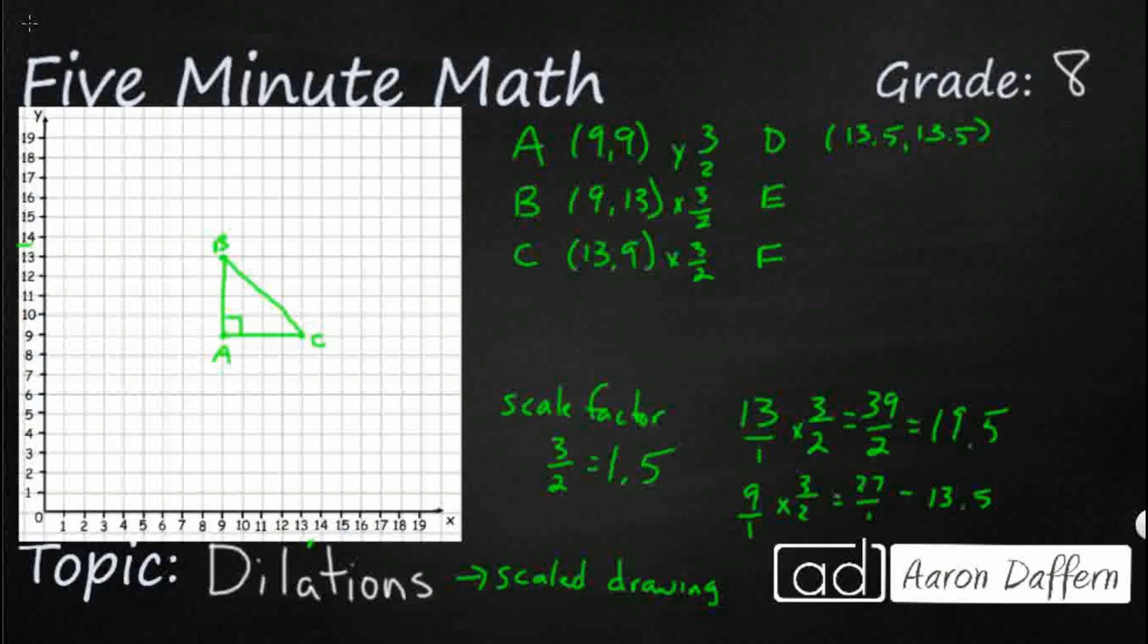And so it's actually not necessarily even going to be on a line. It's actually going to be between 13 and 14 for both the X and the Y. So this is going to be my point D.